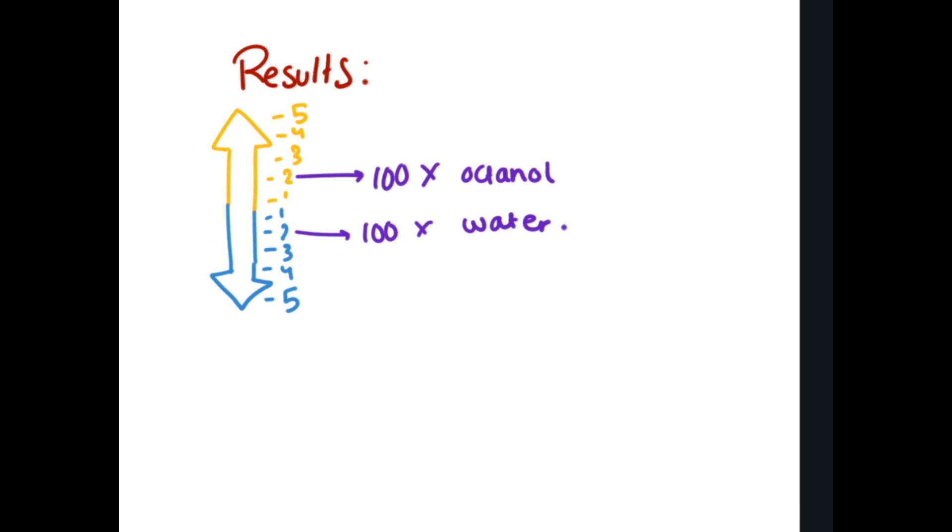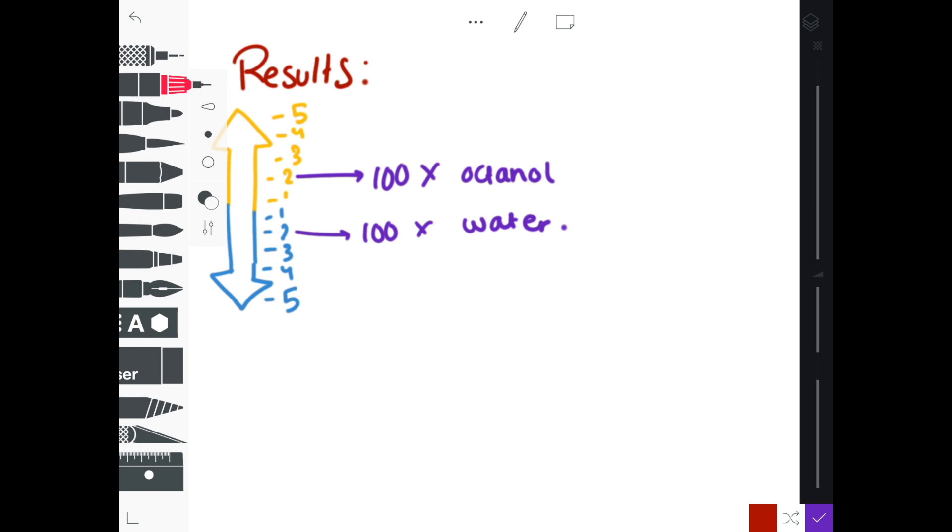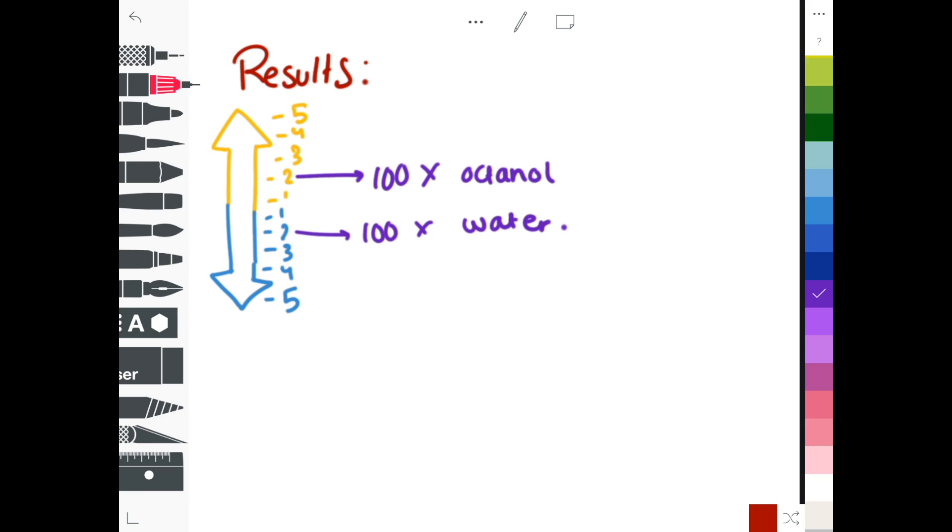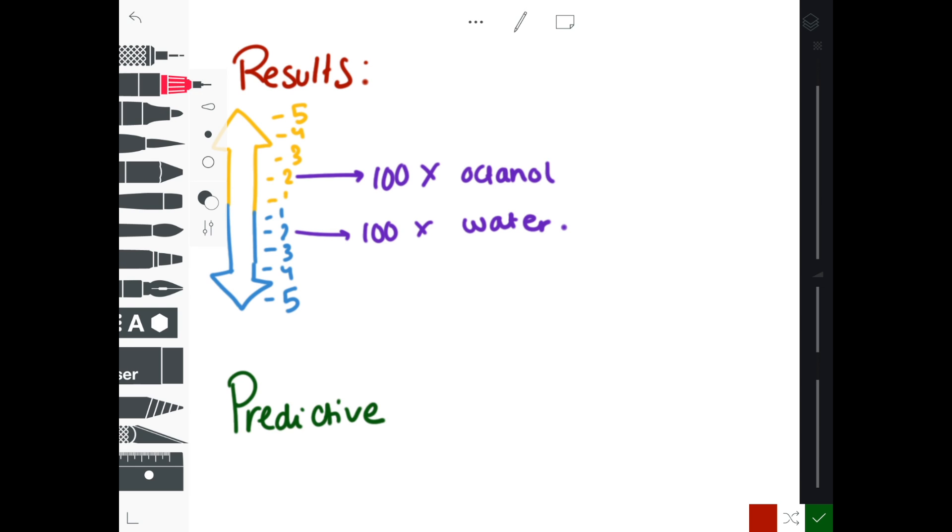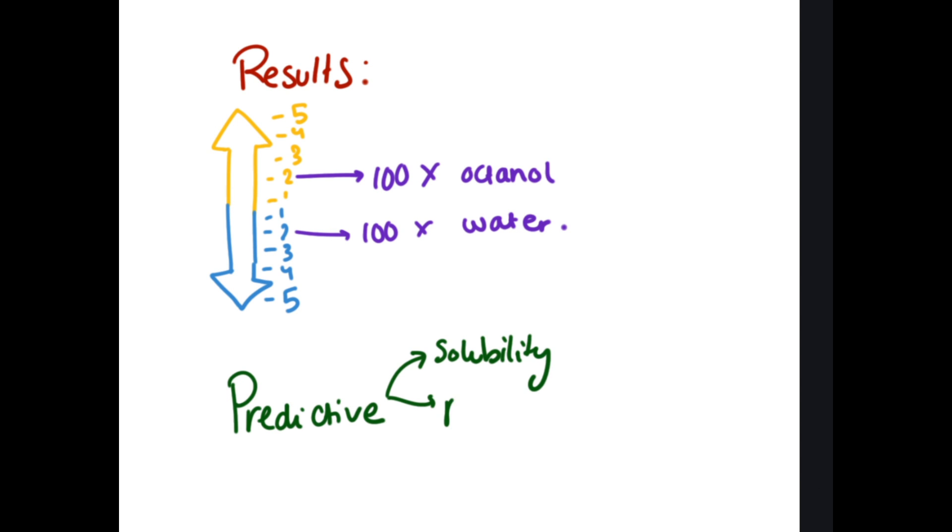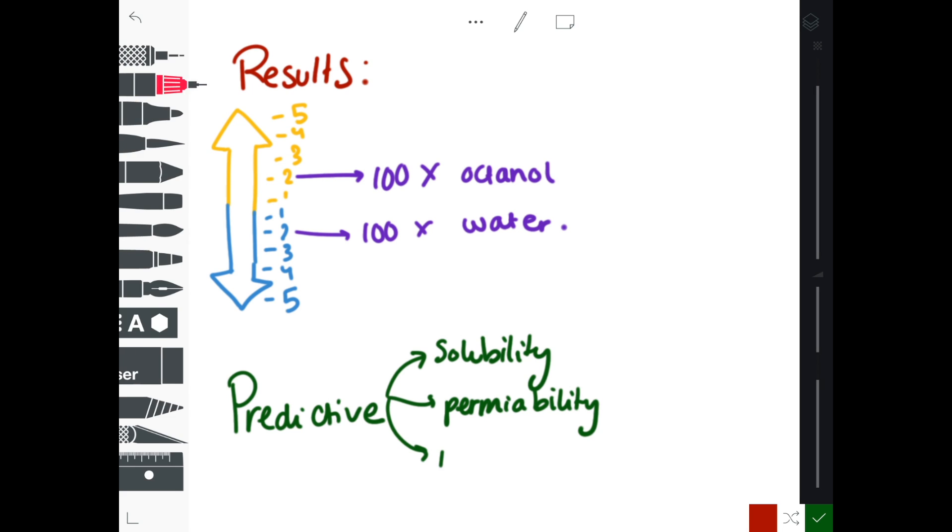If we get a result of positive two, the drug is 100 times more likely to be in octanol than in water. If it was negative two, it would be the opposite. LogP is predictive of solubility, permeability, plasma protein binding, and adsorption.